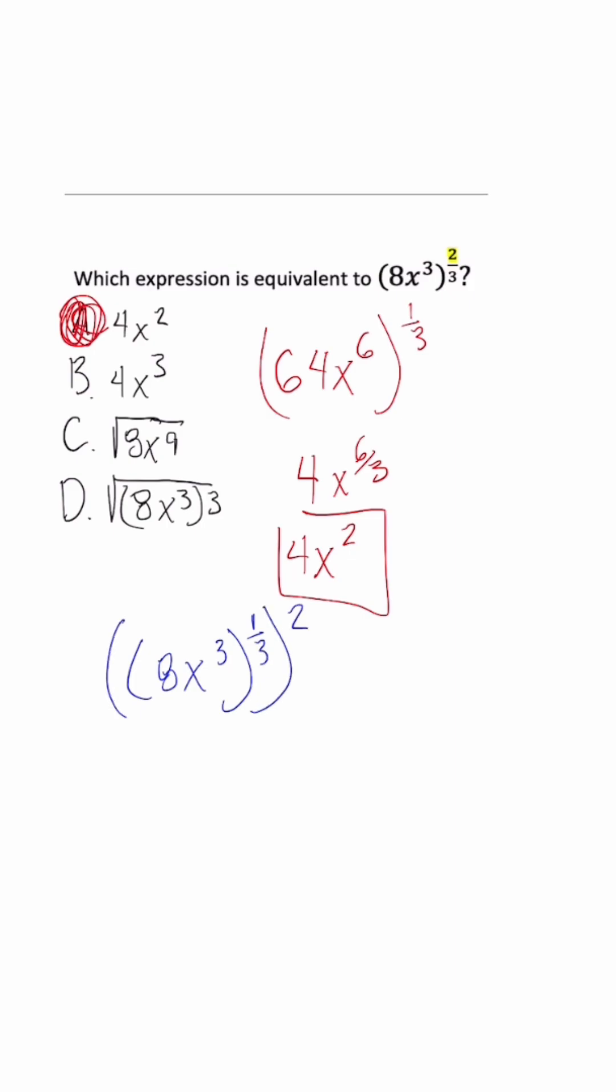So 8x to the one-third, cube root of 8 is just 2. When we multiply the exponents, x to the third times one-third is just x to the 3 over 3, so this is just 2x.